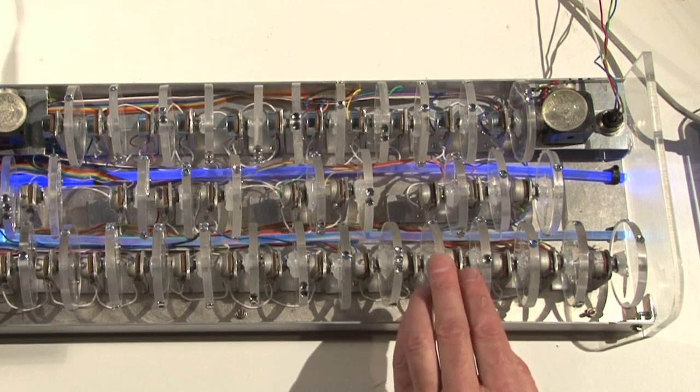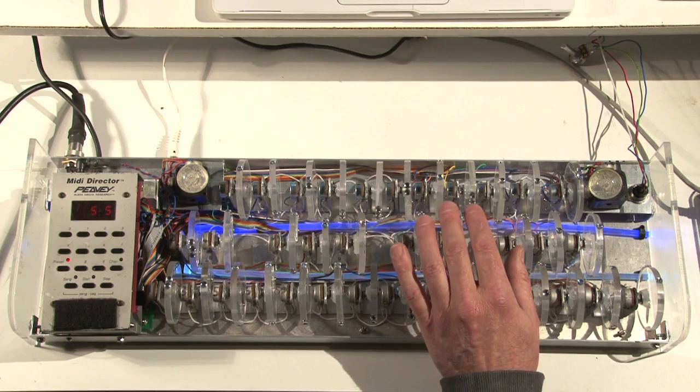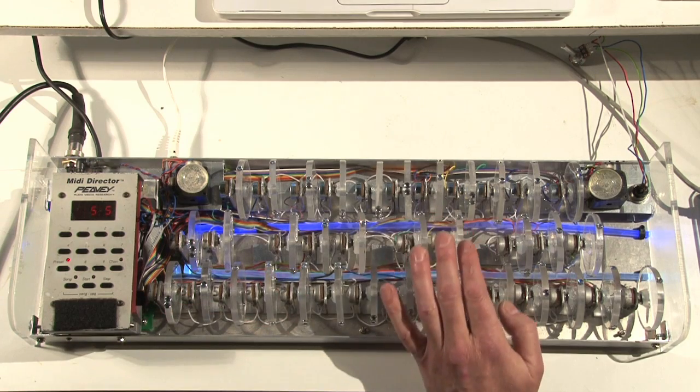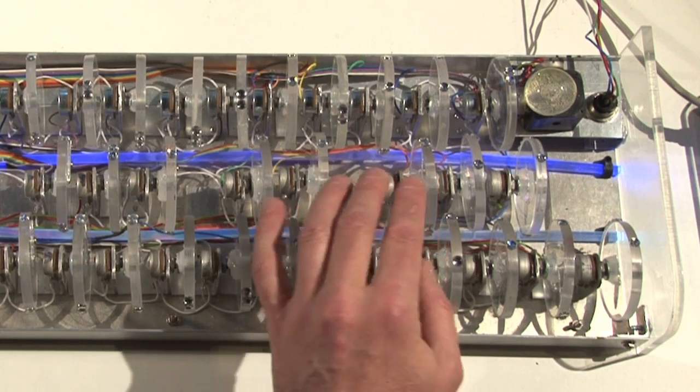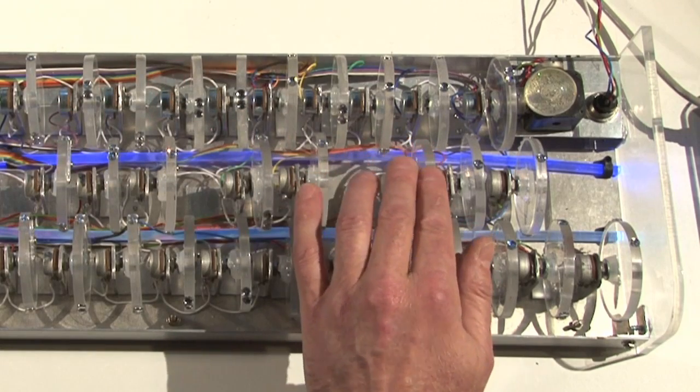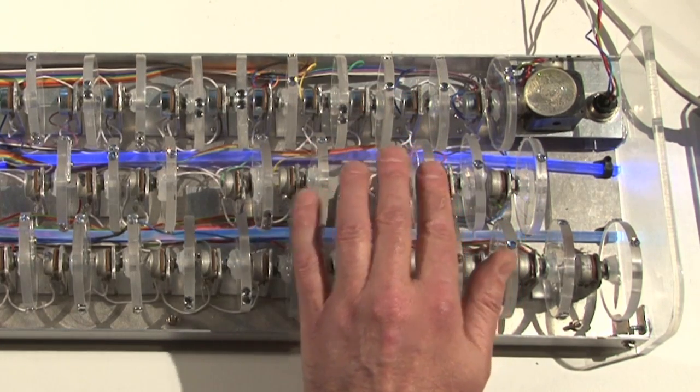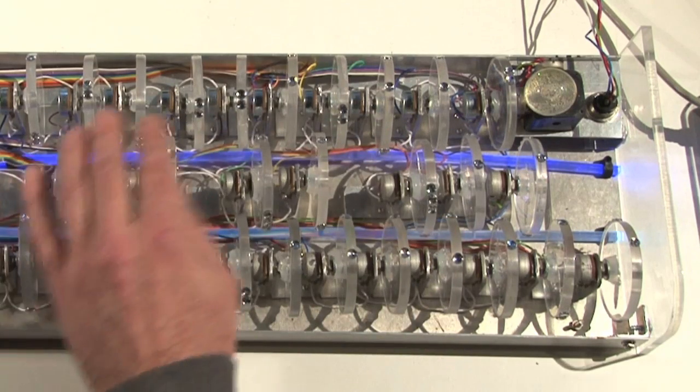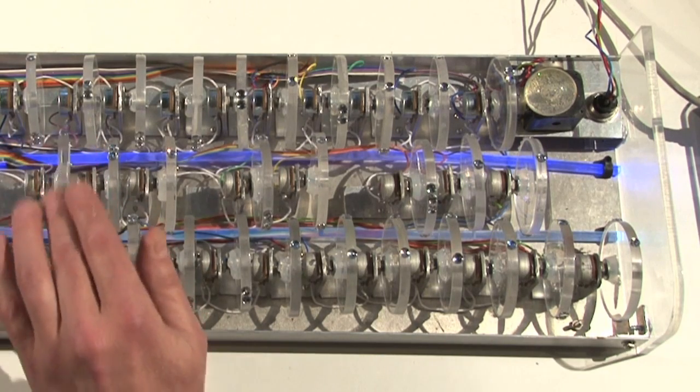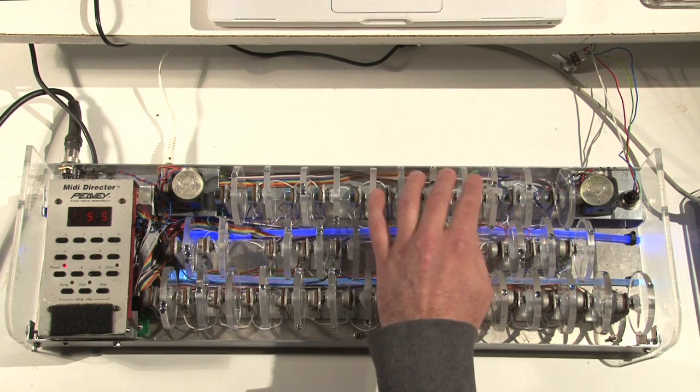Then we have the next section which is essentially all the other controls that I couldn't put in any of those sections. We have glide, the resonance control of the filter. Take that off. Nice when you're using this in conjunction with the filter control filter envelope.